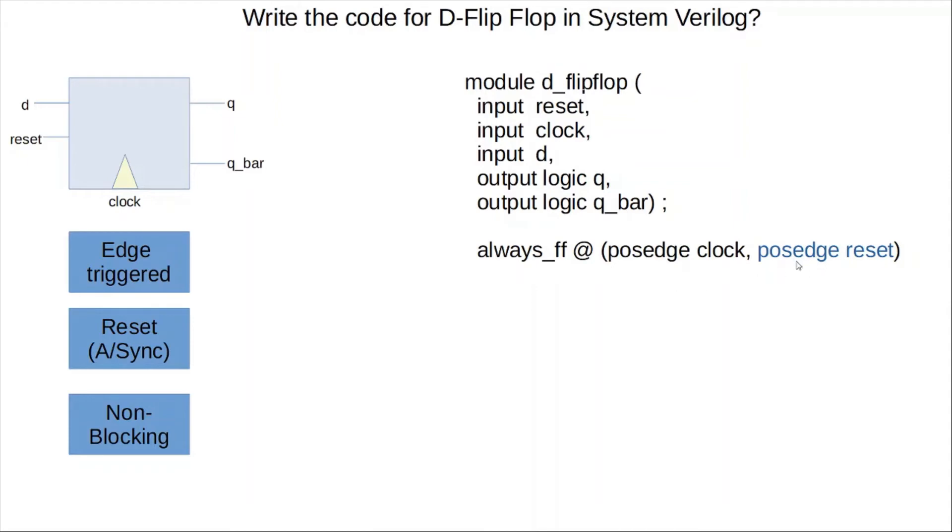Here we also have this reset in the sensitivity list, and this is positive because we are expecting it to be an active high reset. So by adding the reset to the sensitivity list here, that means this is an asynchronous reset flip-flop. So then we have our basic begin: if reset, then Q gets the output as zero, else Q gets D as the output, and in the end we assign the inverse of Q to Q_bar.